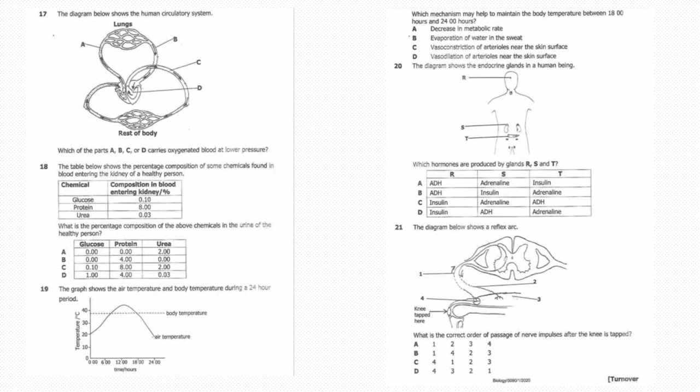Seventeen: The diagram below shows the human circulatory system. Which of the parts A, B, C, or D carries oxygenated blood at lower pressure? The answer is B. Eighteen: The table below shows the percentage composition of some chemicals found in blood entering the kidney of a healthy person. What is the percentage composition of the above chemicals in the urine of a healthy person? The answer is A: glucose 0.0, protein 0.0, and urea 2.0. Question 19: The graph shows the air temperature and body temperature during a 24-hour period. Which mechanism may help you to maintain the body temperature between 18 hours and 24 hours? The answer is C, vasoconstriction of the arterioles near the skin surface.